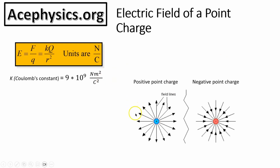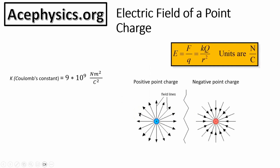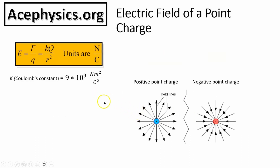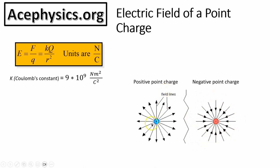If I take a positive charge and place it at a location in space, that charge would feel a force pointing radially outward in that direction. The electric field exists even when the charge is not placed there — it is a force per charge at that location. If I put a mass there instead, the mass would feel no electric force, because the electric force acts between charges, not between masses. The gravitational force acts between masses. The electric field for a negative point charge points radially inward; for a positive point charge, it points radially outward.